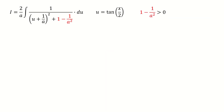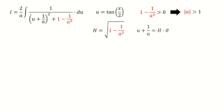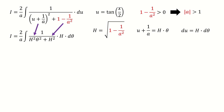Next, let's look at case 3, when the red term is greater than 0. This is equivalent to saying the absolute value of a is greater than 1. We define capital H as the square root of the red term, and let u plus 1 over a equal H times theta. Plugging back into the integral, the first term u plus 1 over a squared converts to H squared theta squared, and the red term converts to H squared as well.